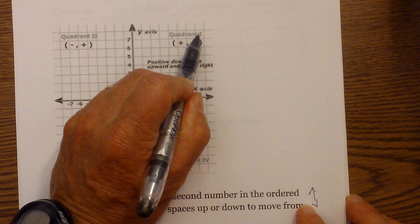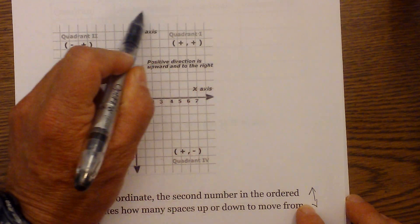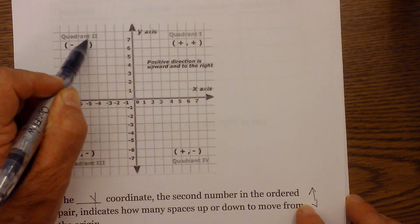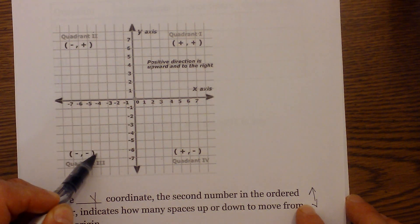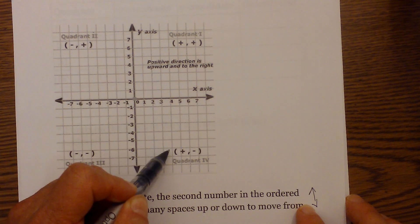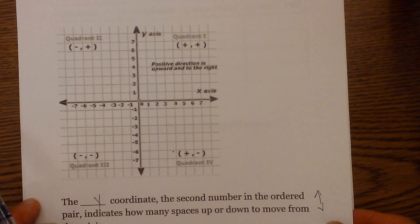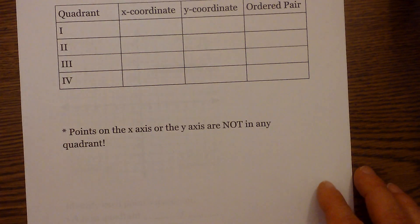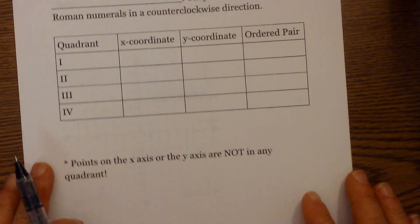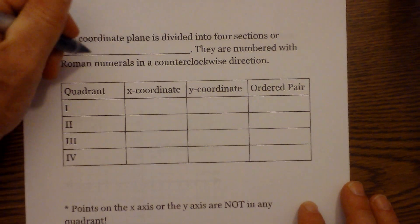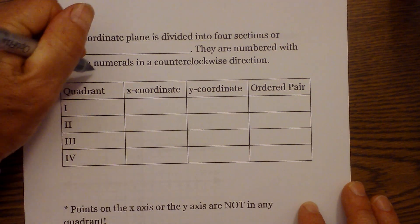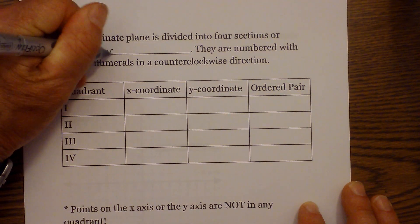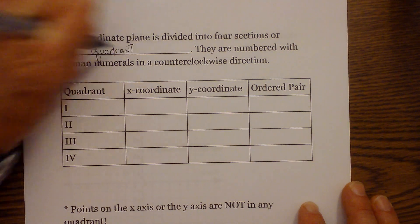So this is quadrant one. Then we move in this fashion to quadrant two. Then we go to quadrant three and then quadrant four. So the coordinate plane is divided into four quadrants and they move in a counterclockwise direction.